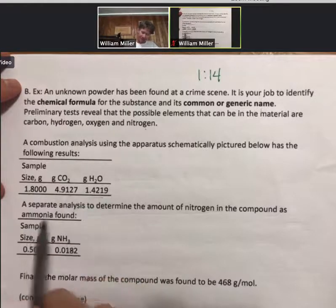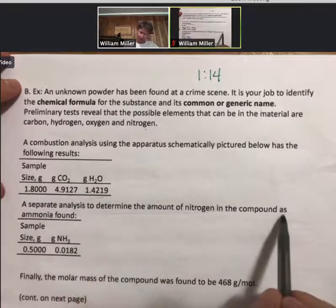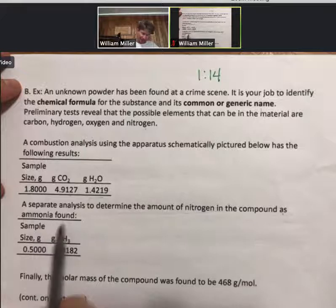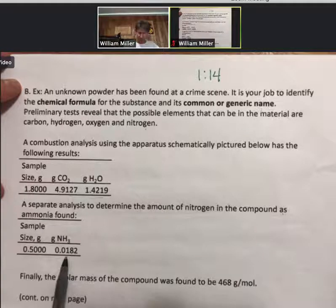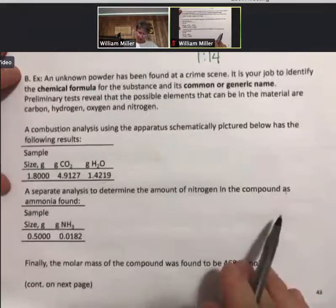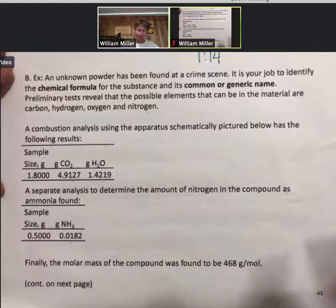A separate analysis to determine the amount of nitrogen in the compound as ammonia found that in a 0.5 gram sample there were 0.0182 grams of ammonia. Finally, the molar mass was found to be 468.